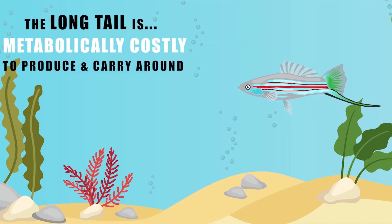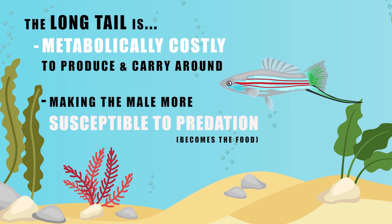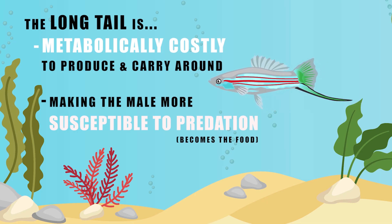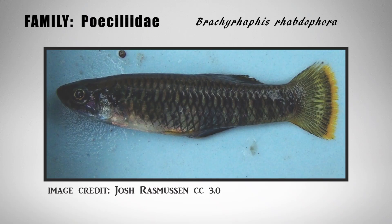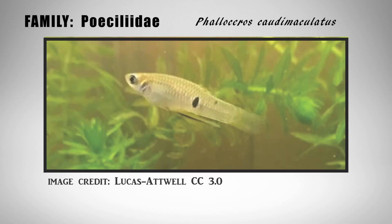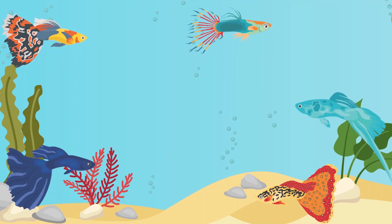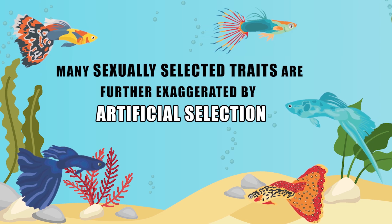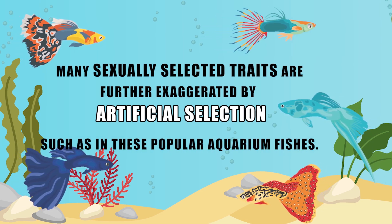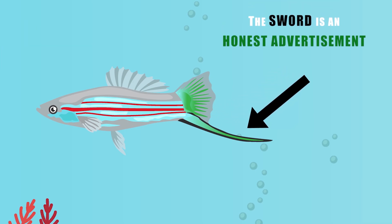So that sword — that elongated growth of the caudal fin — does not help the male survive. It is metabolically costly to produce and to carry around. That easily seen and cumbersome tail makes the male more susceptible to predation, such as by other piscivorous fishes. Within many species of the swordtail's family and other closely related species, the same burdens come with the various bright colorations, markings, and fancy ornamentations. Many sexually selected traits are further exaggerated by artificial selection, where humans have much control over breeding and predation, such as in popular aquarium fishes.